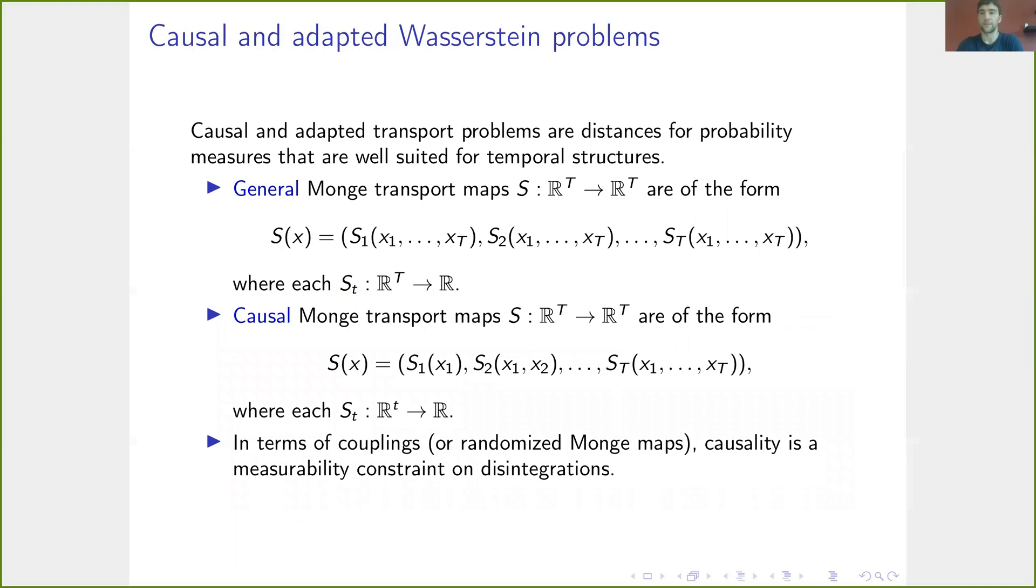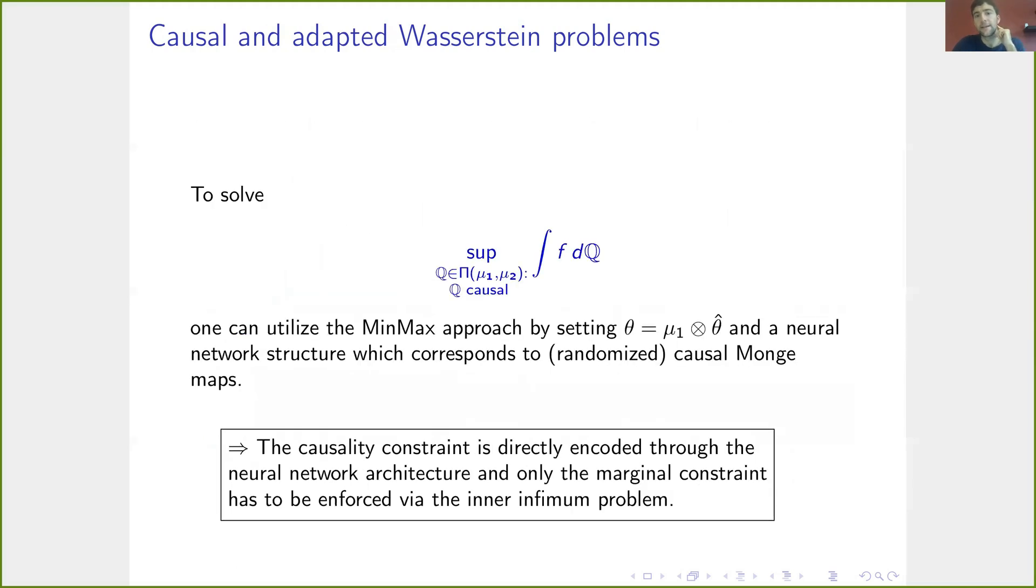So just very quickly, because I'm running out of time, but I just want to say that this method can very nicely be adjusted to solve the causal and adaptive Wasserstein problems. The key insight here is that the causality constraint can directly be encoded through a suitable neural network architecture. So we do not have to enforce the causality constraint through this variational approach, but it can directly be included by a suitable network architecture.